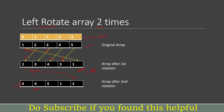After two rotations, this is our resultant array. Let us note the pattern. The element which was at index zero is now at index three after two rotations. Similarly the element which was at index one is now at index four after two rotations. So the element that was at index one goes to index four - and similarly if we look, the element which was at index two, which was three, is now at index zero after two rotations.